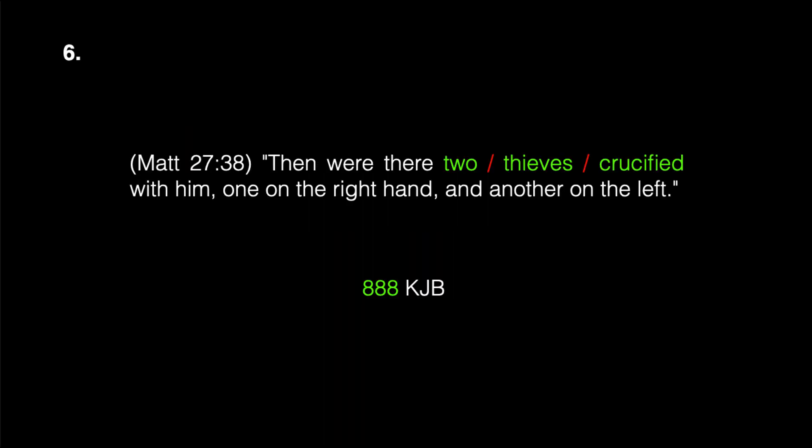The sixth occurrence of crucified is in Matthew 27:38: 'Then were there two thieves crucified with him, one on the right hand and another on the left.' The words 'two thieves' and 'crucified' combined appear 888 times in the King James Bible. All three-digit repdigit numbers are multiples of 37. 888 is 74 times 12. If it is an odd repdigit number it is a multiple of 37; if it is an even repdigit number it is a multiple of 74.